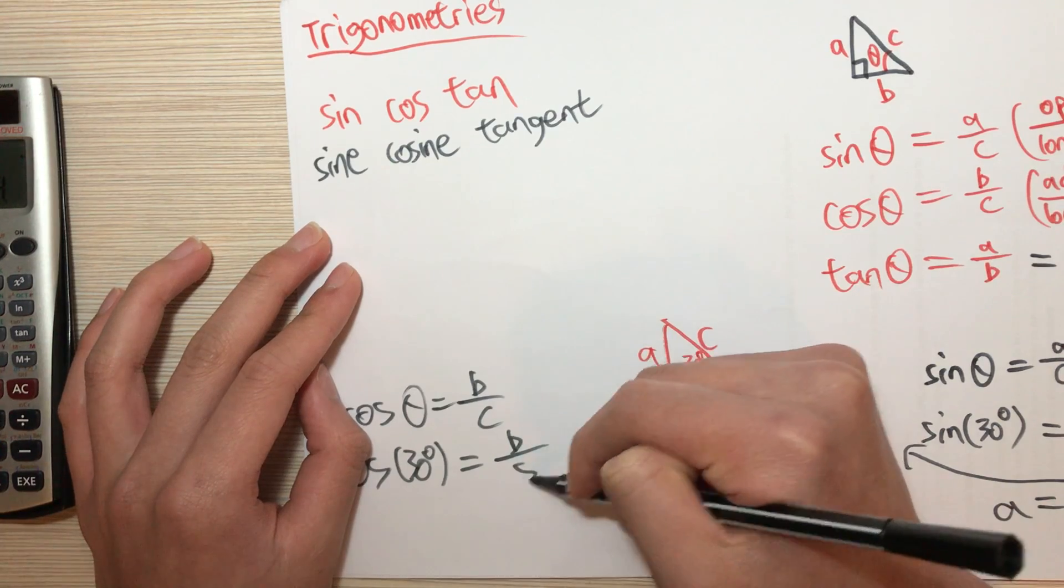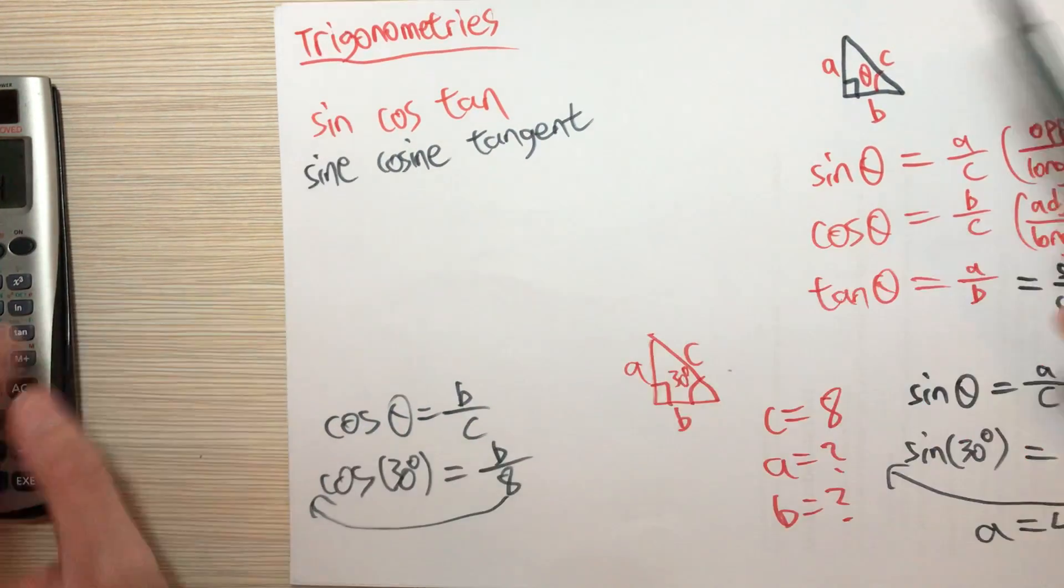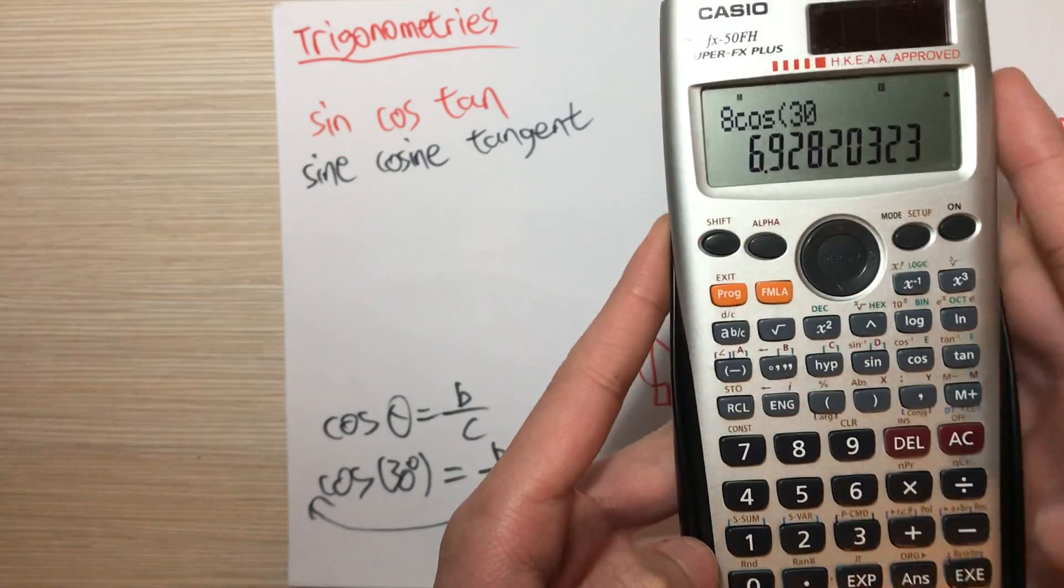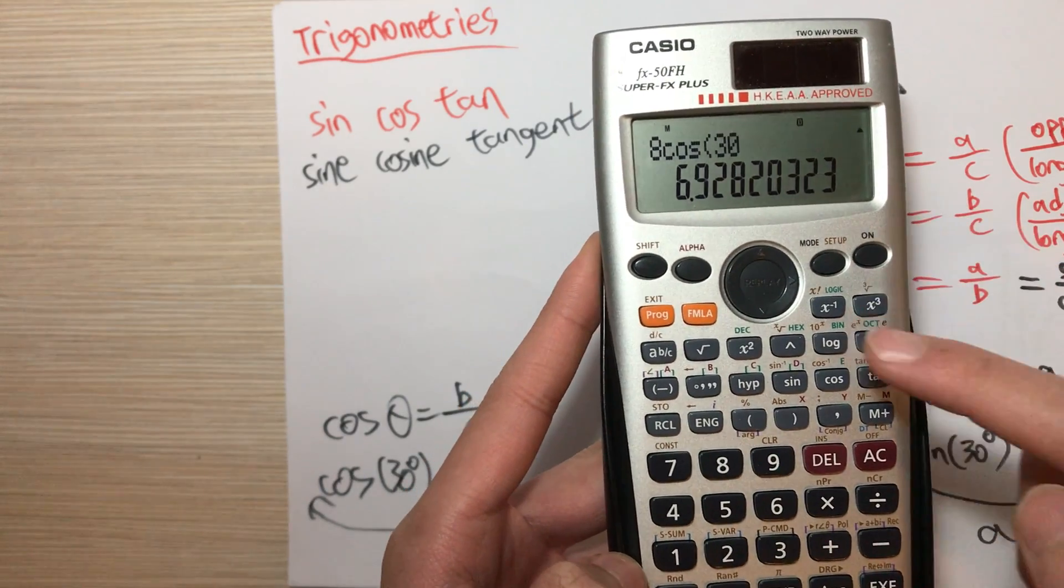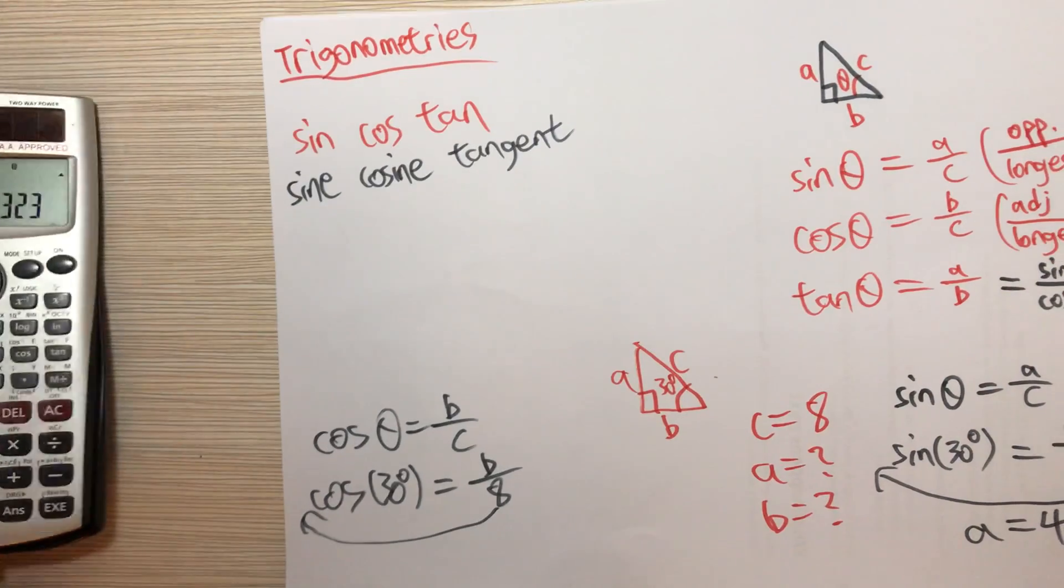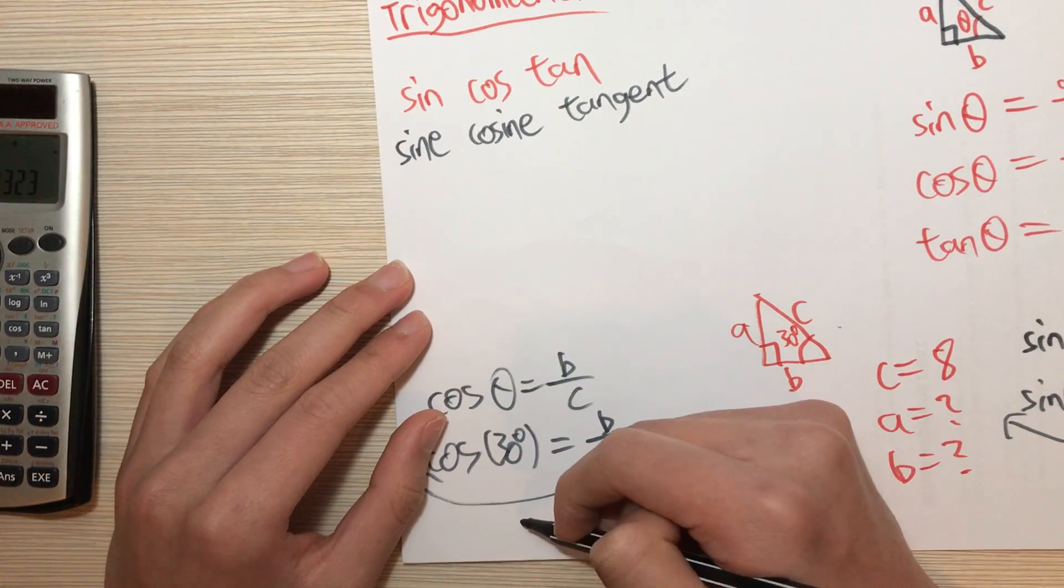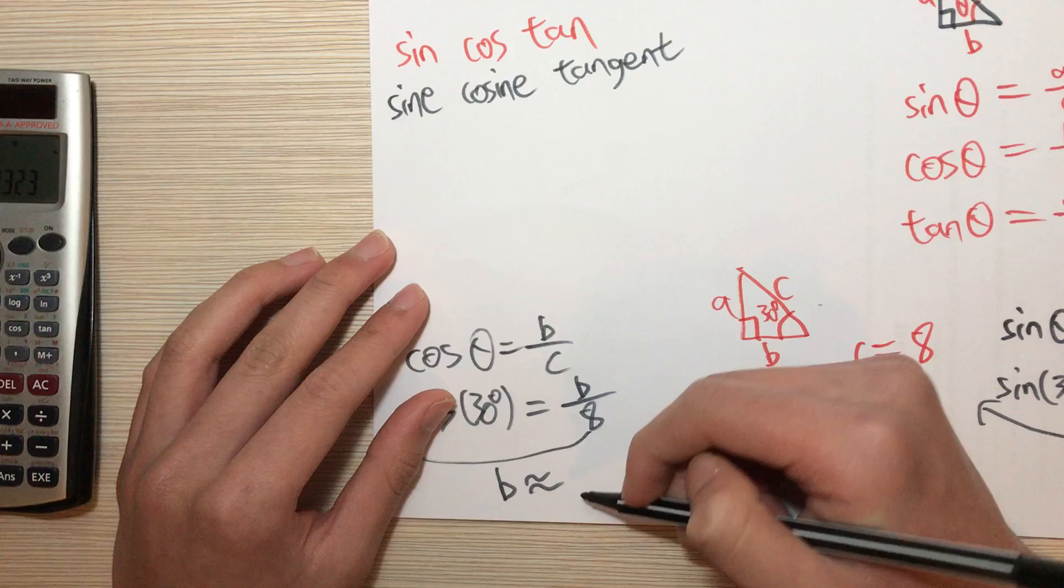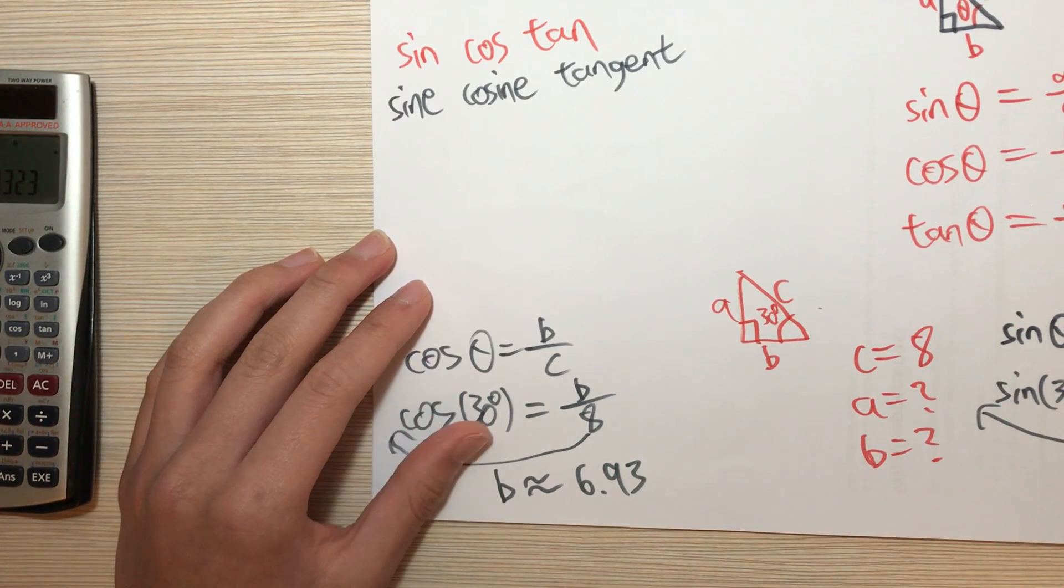So again we move the 8 here, and we input cosine 30 degrees. Now it should be an ugly number, it is normal. So we take the 3 significant figures and we get B is approximately equals to 6.93.